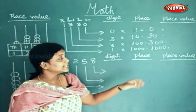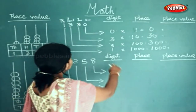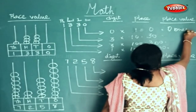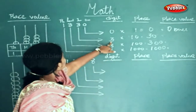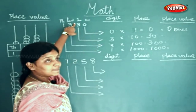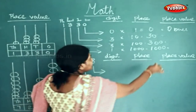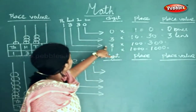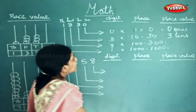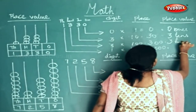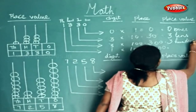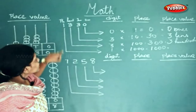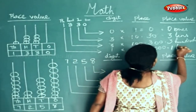Now we shall see the place value for the given numbers. This will be written as zero ones. This will be written as three tens — you see this in the tens place. This is in your hundreds place, so this will be written as three hundreds. And this one is in your thousands place, so this will be written as one thousands.